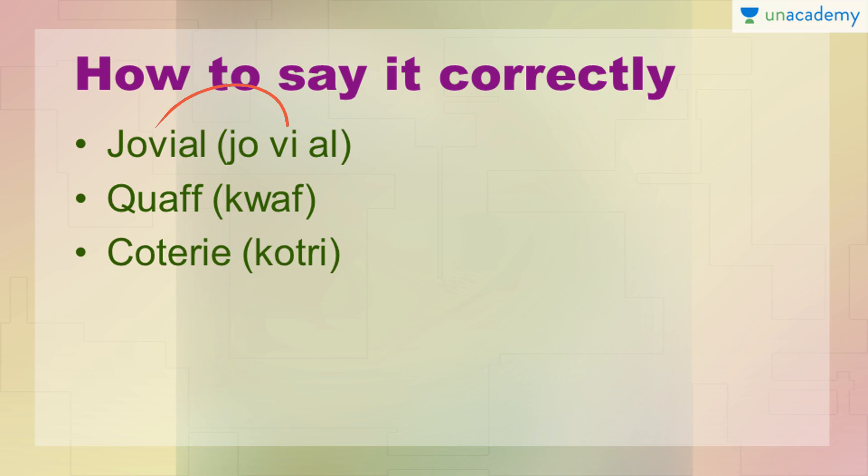The next one we have is 'coterie.' Theek hai — this is coterie. Iska matlab hota hai a group of persons who attend to a particular task. Aap isme example le sakte ho kisi bhi office ka ya phir kisi bhi group ka jisme teams divided hoti hain. Different different kaam diye jate hain — suppose ek office mein ek team hai management ki, ek team hai call handling ki — toh woh particular task karne wali teams ko kehte hain coterie.